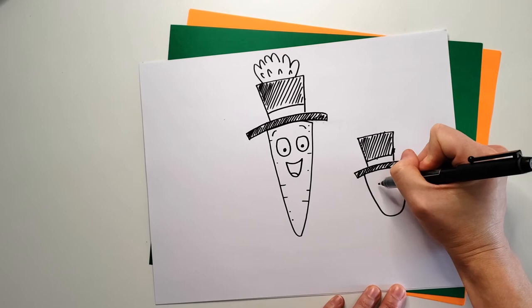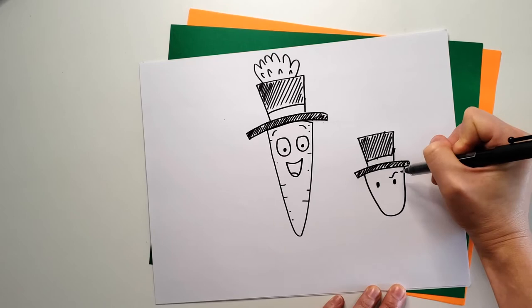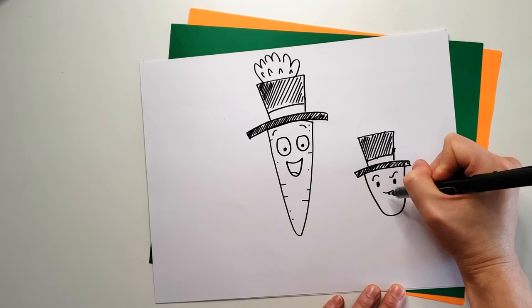Now what did we need next? We needed a face. So let's draw dot eyes this time, and let's give him a sneaky look. Like that. Now we need a smile again, which is the two curvy lines and a little line for the tongue.